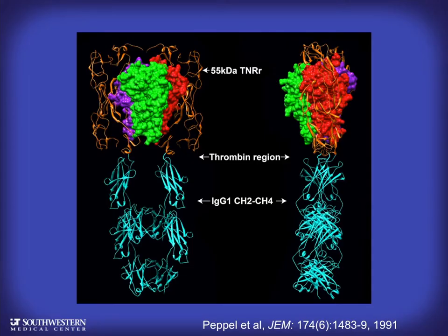I thought it would be beneficial to neutralize TNF for clinical effect. Lacking confidence that antibodies would do the job long-term in chronic inflammatory diseases, I decided to make a TNF inhibitor by fusing the ectodomain of TNF receptors to immunoglobulin heavy chains. These fusion molecules were stable, non-immunogenic for long periods in animals, and extremely specific and avid in binding and neutralizing TNF. They eventually saw clinical use and are still used today to treat rheumatoid arthritis and other inflammatory diseases.